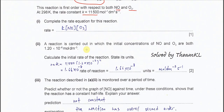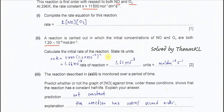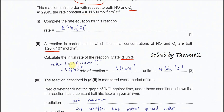Part 2: a reaction is carried out in which the initial concentrations of NO and ozone are both 1.2 × 10⁻⁶. Calculate the initial rate of reaction and state its unit. You just need to substitute the values — the rate constant and the concentrations — into the rate equation from Part 1. Substitute 11500 and (1.2 × 10⁻⁶)², giving 1.66 × 10⁻⁸. The unit is mol dm⁻³ s⁻¹.